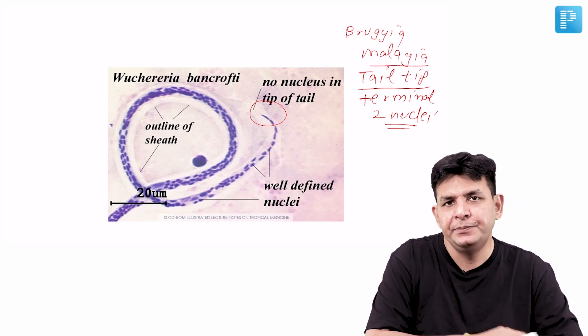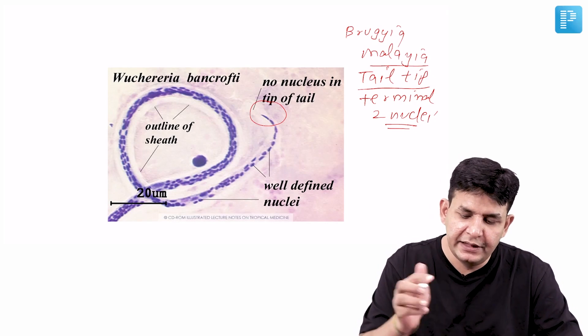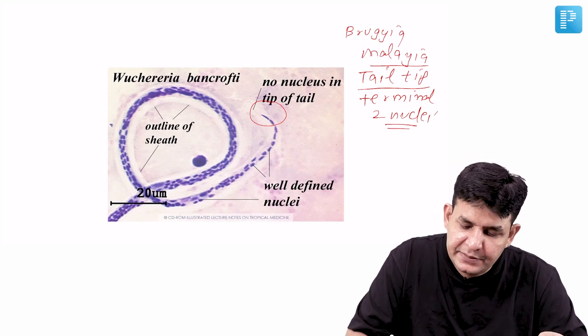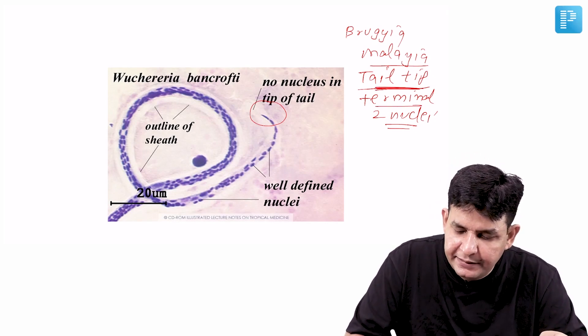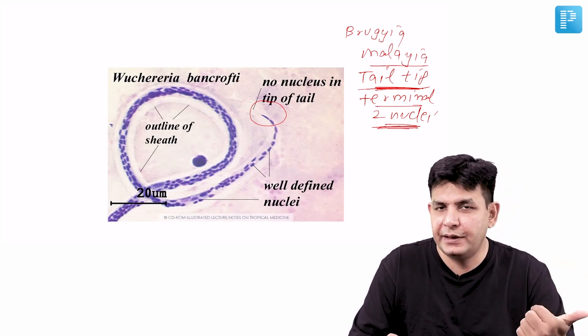So this is the characteristic difference between the normal one, that is Wuchereria bancrofti, and Brugia malayi - this particular microfilaria has tail tip having terminal 2 nuclei whereas that is having tail tip free of nuclei.